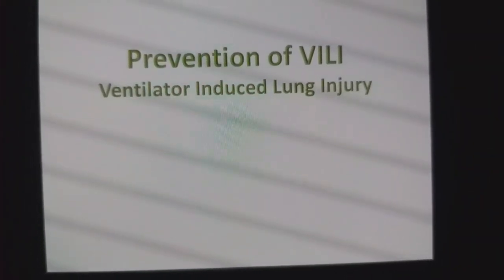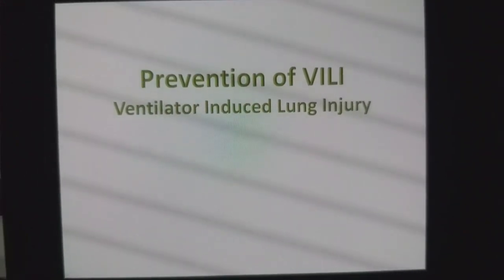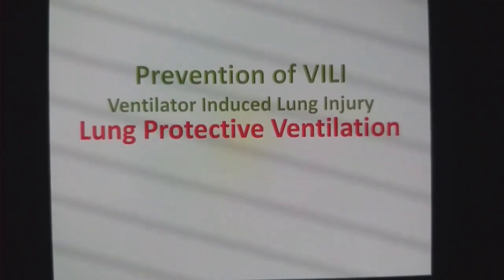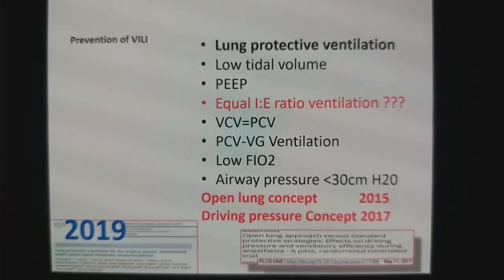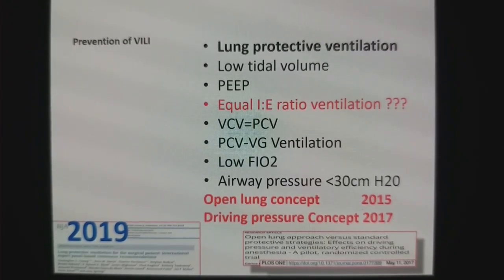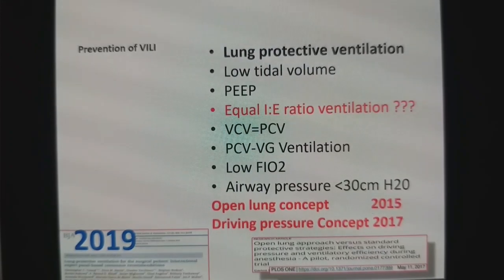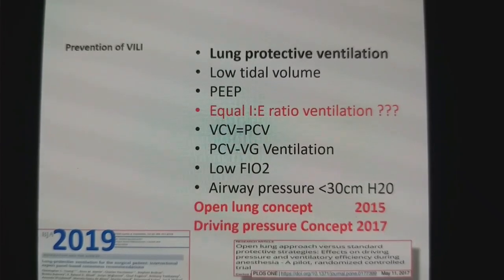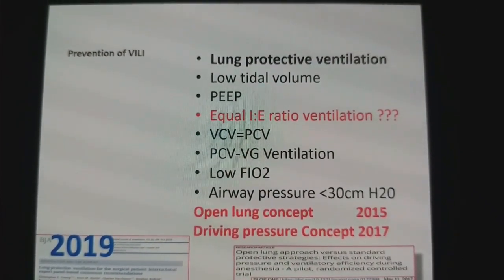If you want to prevent VILI, if you want to prevent ventilator-induced lung injury, that can only be achieved by lung protective ventilation in the OR: low tidal volume delivery, high PEEP, and appropriate IE ratio ventilation. The 2015 guideline for ventilating obese patients recommends equal ratio ventilation, while the 2019 consensus guidelines recommend normal ratio ventilation — IE ratio 1:2.